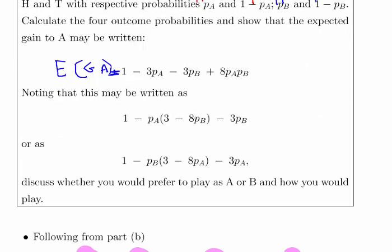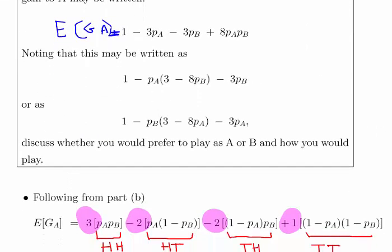Now there's another part to this question here. Noting that this may be written as 1 minus PA times 3 minus 8PB minus 3PB, or alternatively. Say if you would prefer to play as A or B, and how would you play it? So this is sort of setting up for a question that's going to come later on. Don't worry about it too much. It really is sort of inviting you to make an educated guess, sort of probe one of those little formulas there and just sort of see what would happen.